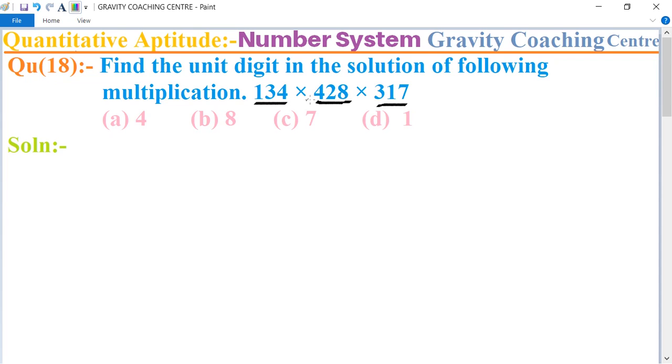The unit digit of 134 is 4, multiply unit digit of 428 is 8, and 317 is 7. Their product equals 224, so here 4 is the units digit.